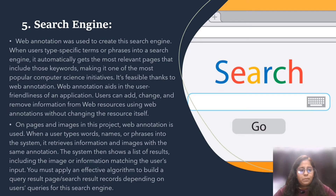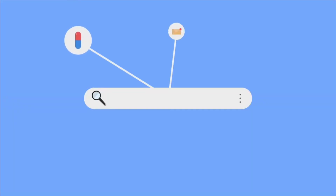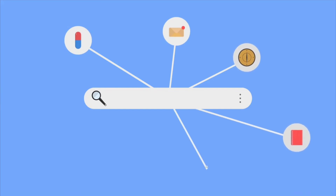Our fifth and top project is a Search Engine. Web annotation was used to create this search engine. When users type specific terms into a search engine, it automatically retrieves the most prevalent pages containing those keywords, making it one of the most popular computer science projects. To create a programmable search engine, choose which sites to search, give your search engine a name from the programmable search engine home page, and click 'Create a custom search engine' or 'New search engine'.